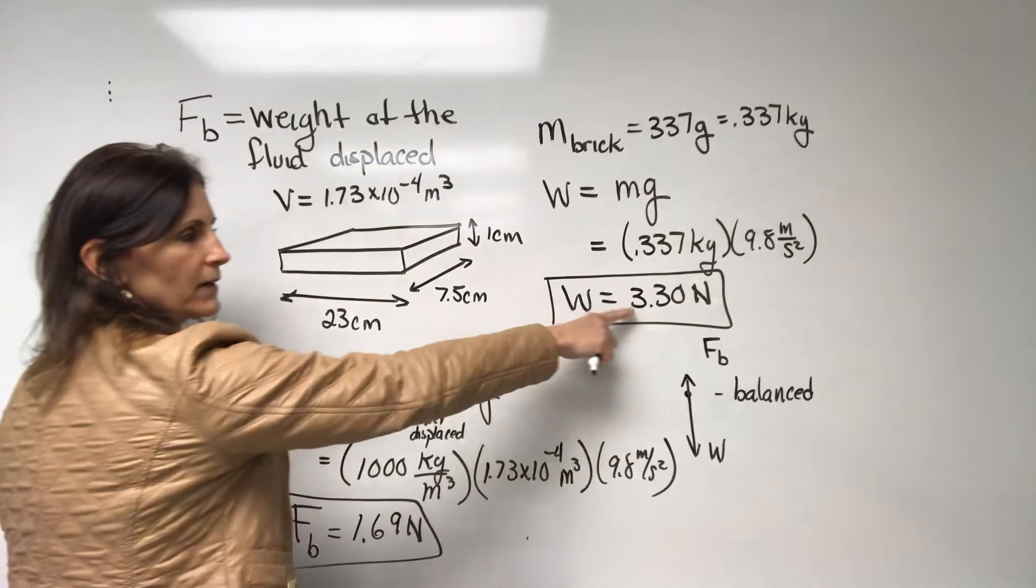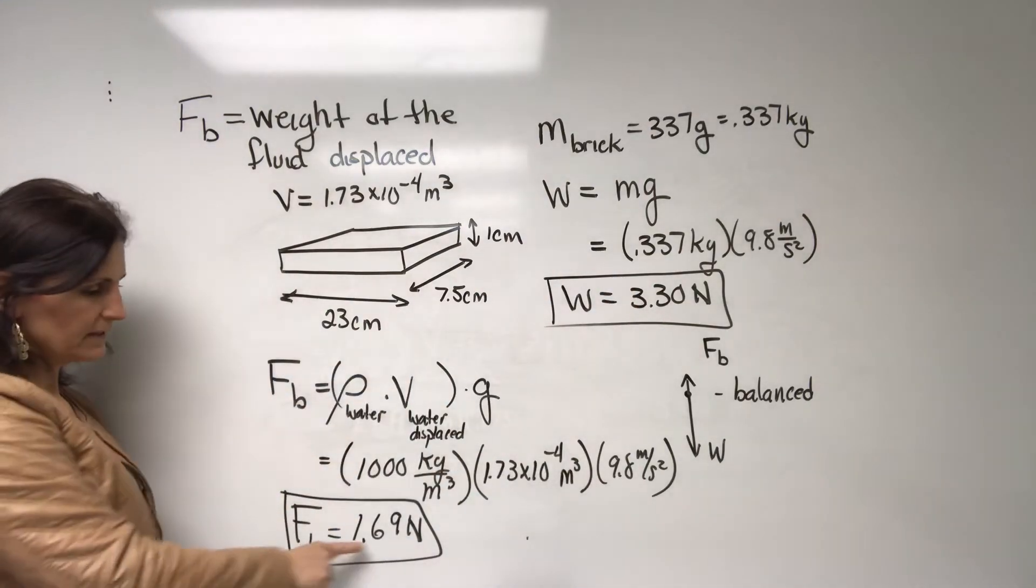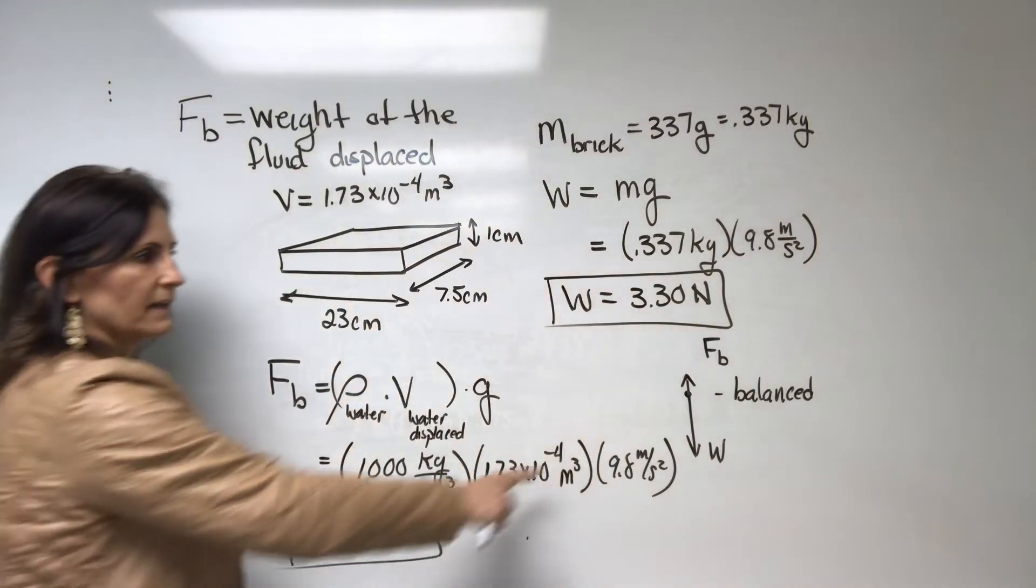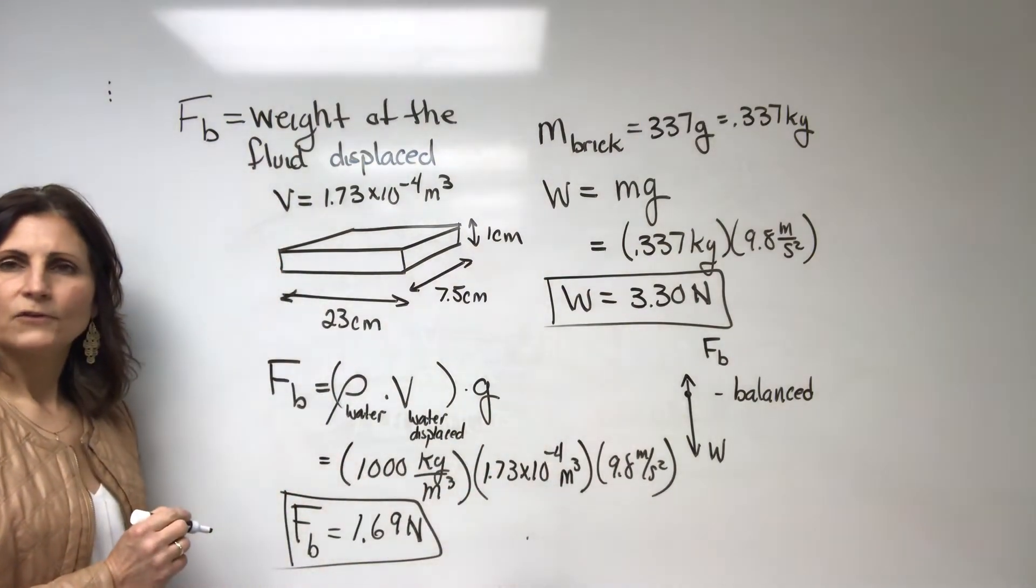So all of those multiplied together gives us our maximum buoyant force to be, I get 1.69 newtons. So if the weight of my brick is 3.3, obviously this buoyant force of 1.69 is not enough to keep that afloat.